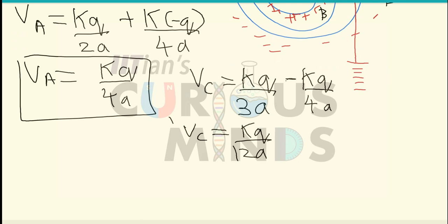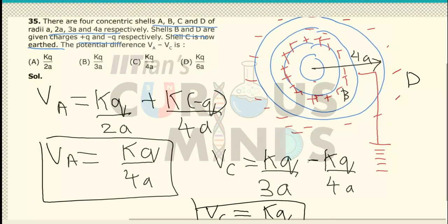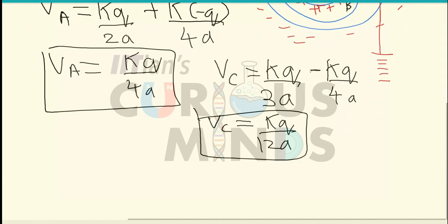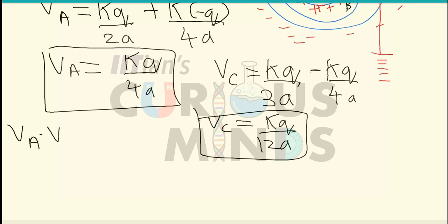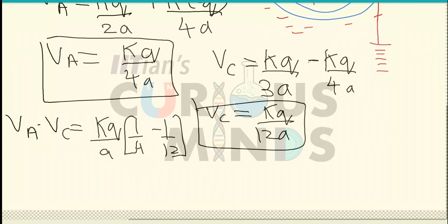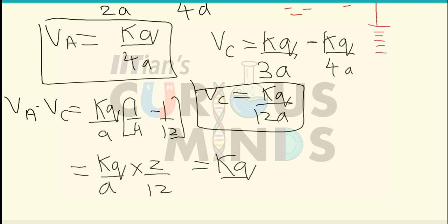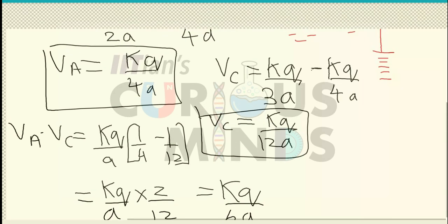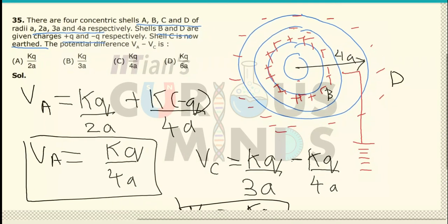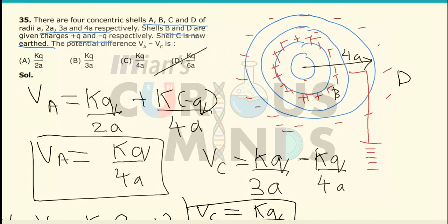So VA minus VC will be equal to KQ divided by A times (1/4 minus 1/12), which equals KQ divided by A times 2/12, giving KQ divided by 6A. This is the total potential difference between shell A and shell C, which corresponds to option D.